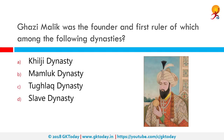Ghazi Malik was the founder and first ruler of which among the following dynasties? Ghazi Malik or Ghiyasuddin Tughlaq was the founder of the Tughlaq dynasty in India. He reigned over the Sultanate of Delhi between 1320 to 1325 AD and founded the city of Tughlaqabad. His reign was cut short after five years when he died under mysterious circumstances in 1325 and was succeeded by Muhammad bin Tughlaq.